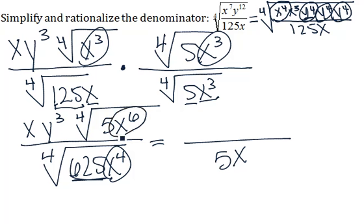And this x to the sixth can be rewritten as x to the fourth times x squared, just like we did up here. And we can take the fourth root of x to the fourth, and we'll just be left with an x.